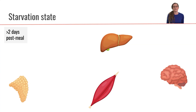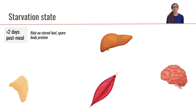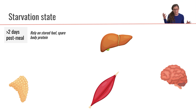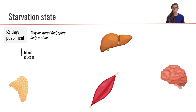Now the final state: the starvation state. We are more than two days since our last meal, so we are relying on stored fuel but also trying to spare some body protein. Remember, in the fasting state we were using some body protein as a source for gluconeogenesis, but we can't do that forever because then we would have no body tissue left, so we have to preserve our body protein and use other methods of generating enough fuel.